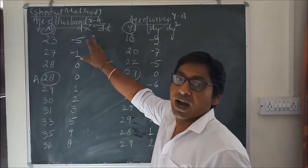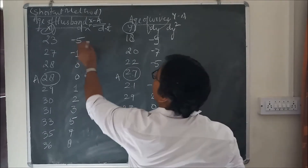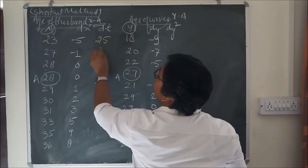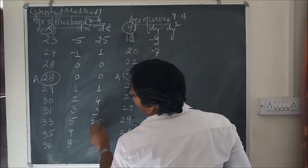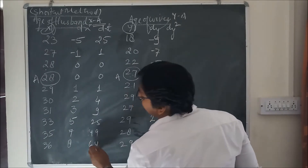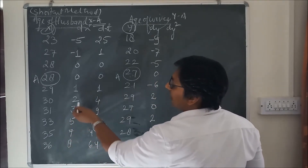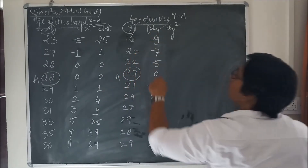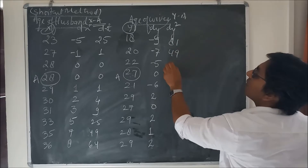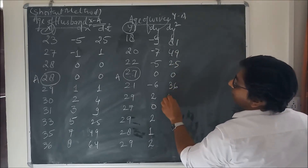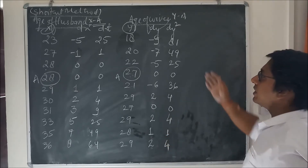Now we calculate dx squared by squaring the dx values: 5 squared = 25; 1 squared = 1; 0; 0; 1; 4; 9; 25; 49; 64. Similarly dy squared by squaring the dy values: 9 squared = 81; 7 squared = 49; 25; 0; 36; 4; 0; 4; 1; 4.